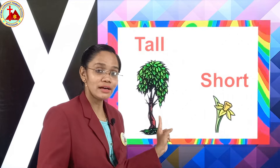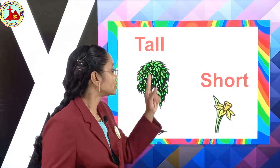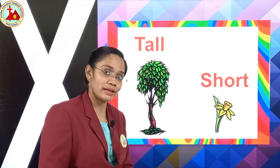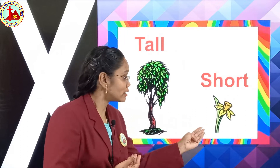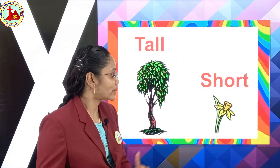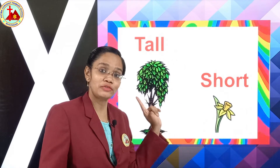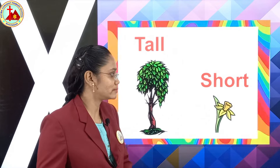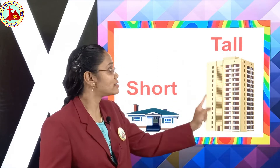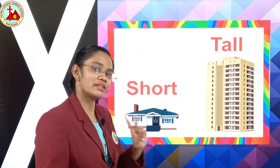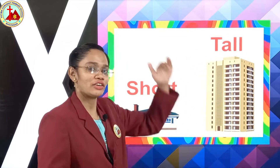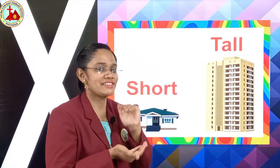This is a tree, and this is a small plant. Tree is tall — T-A-double-L. And this is a small plant, or you can say a small bouquet — a flower. So it is short — S-H-O-R-T. Opposite of tall is short. This is a tenement and it is short; this is a flat and the flat is tall. Opposite of short is tall. Opposite of tall is short.